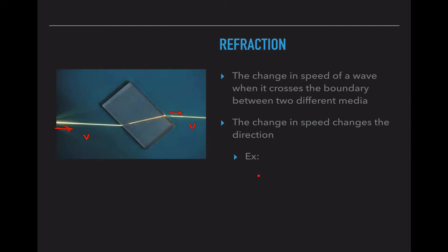There are a couple examples of this. The first one is a pencil in a cup of water. If you've ever seen this trick, it looks like the pencil is broken at the top of the water because the light traveling through the water is slower than the light traveling through the air. So it creates that optical illusion.